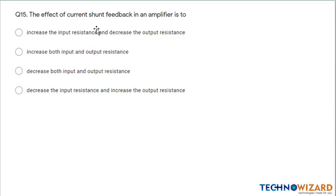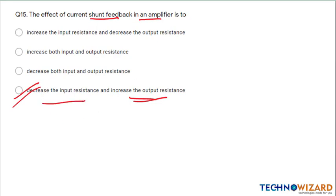Question number 15: the effect of current shunt feedback in an amplifier is to decrease the input resistance and increase the output resistance. Remember this — for current shunt feedback, the effect is to decrease the input resistance and increase the output resistance. Therefore option D is the correct answer.